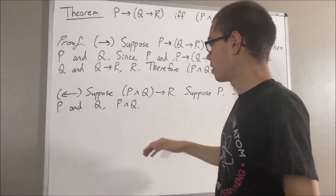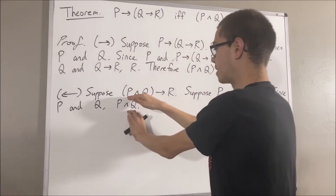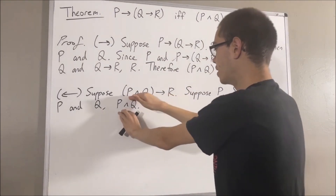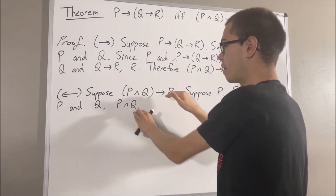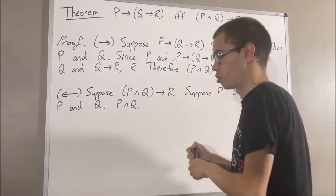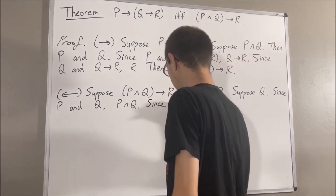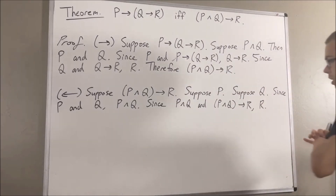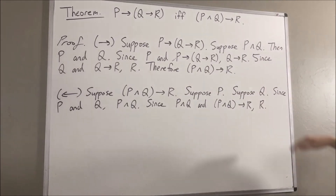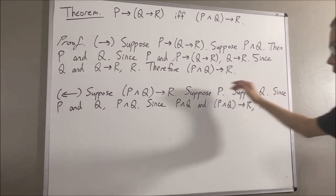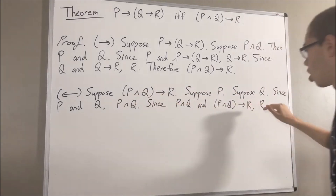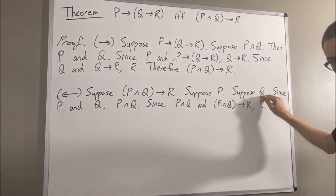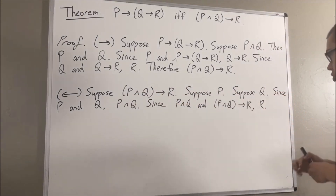But then, since P and Q is true and (P and Q) implies R is true, these two statements tell us that R must then be true. So putting this together, we see that under the assumption Q is true, it follows that R is true. Therefore, if Q is true, then R is true.